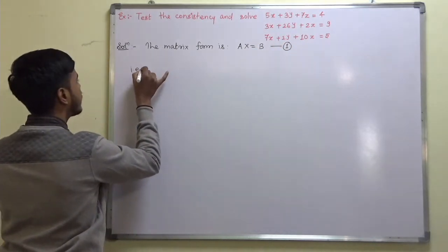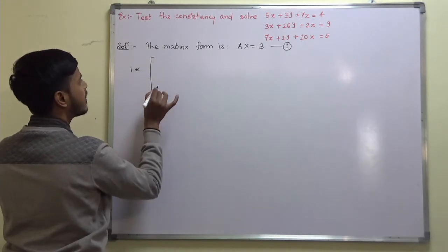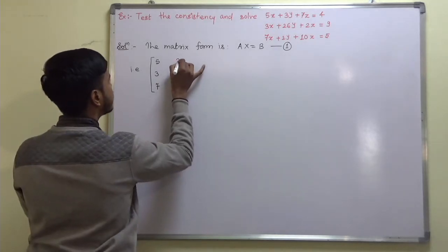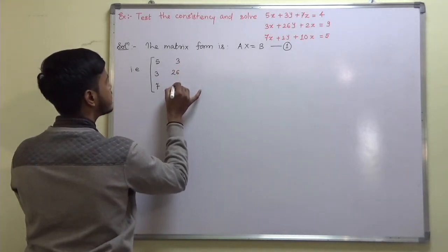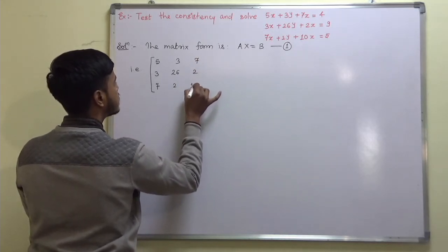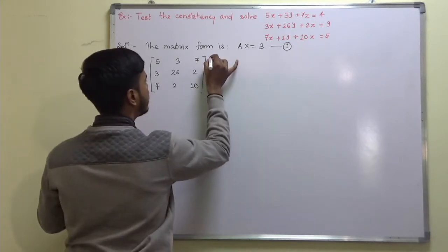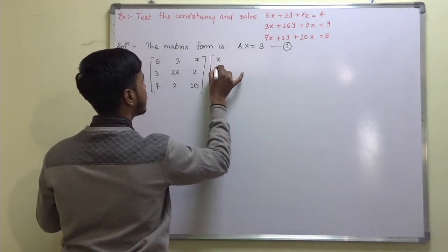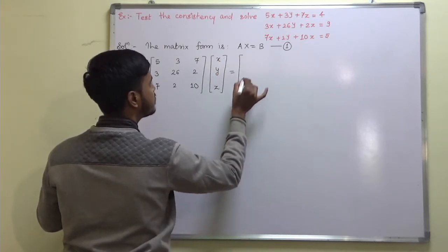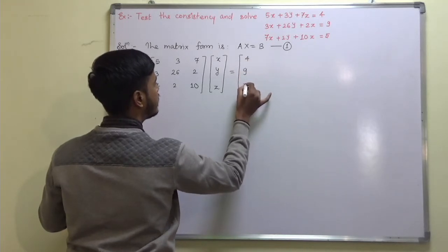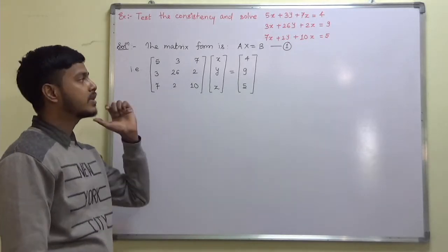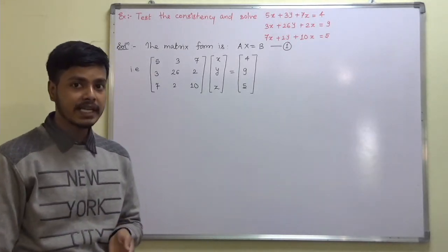What is matrix A? Matrix A is [5, 3, 7; 3, 26, 2; 7, 2, 10], operating on X, Y, Z is equal to B. What is B? B is [4, 9, 5]. Okay, so the first step is over — you just have to write down the matrix form.